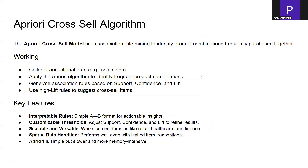The Apriori cross-sell algorithm uses association rule mining to identify product combinations frequently purchased together. The workflow involves collecting transactional data, applying the Apriori algorithm to identify frequent product combinations, and generating three scores — support, confidence, and lift — whose thresholds can be set manually. We use high-lift rules to suggest cross-sell items.